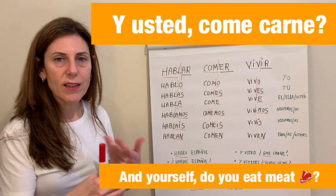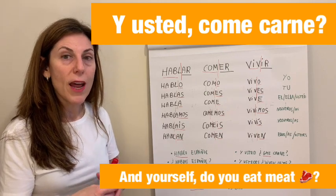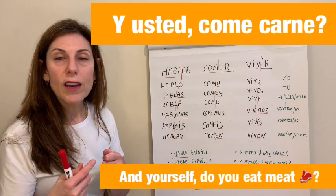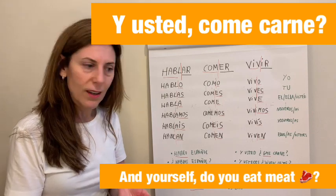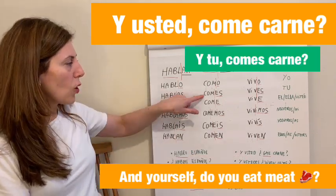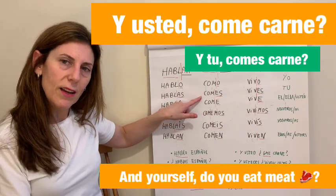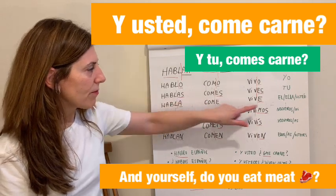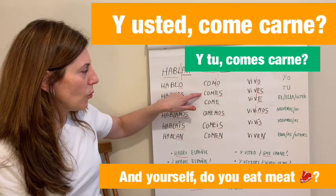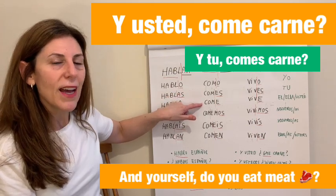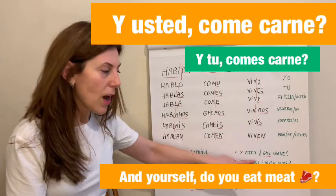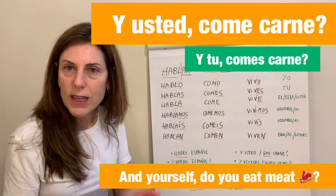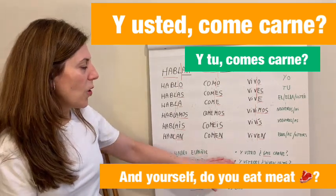If it was a very close friend, I would say '¿Y tú, comes carne?' But because it is formal, I go to the usted form — '¿Y usted, come carne?' Instead of tú, I go to usted. So again, I'm asking 'do you eat meat?' in a formal manner.